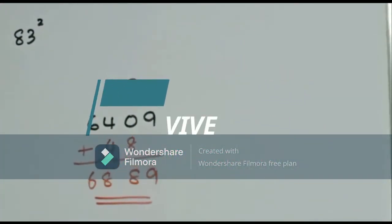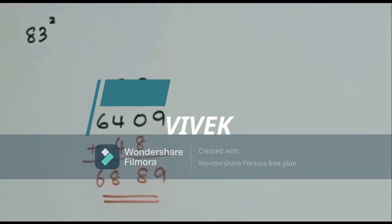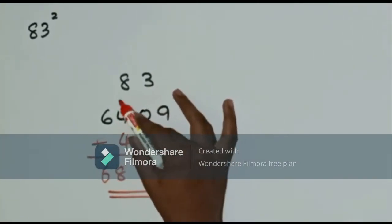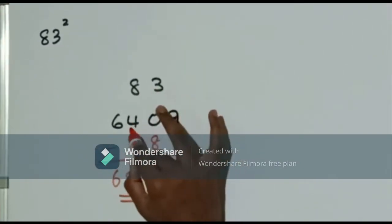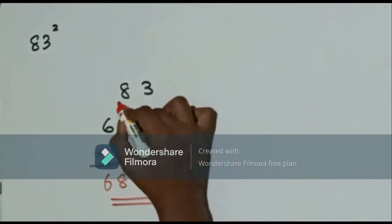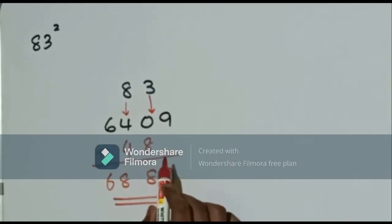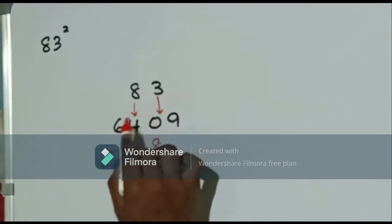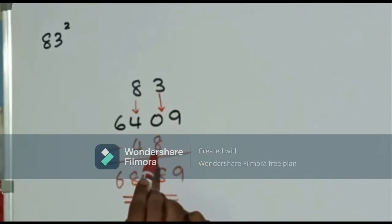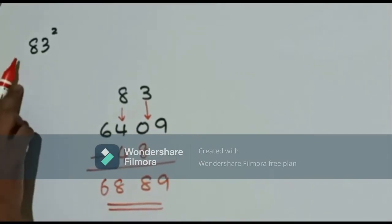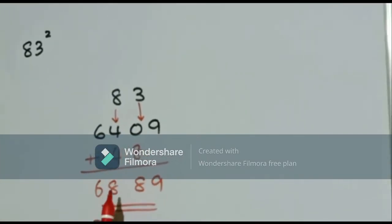This is called Japanese trick to find squares. We need to find the square of 83. In the first step we need to find the square of 8 which is 64 and square of 3 which is 9. In the second step we multiply the product of these two numbers by 2 which is 48. Now we need to add these two and we get the answer of this square which is 6889.